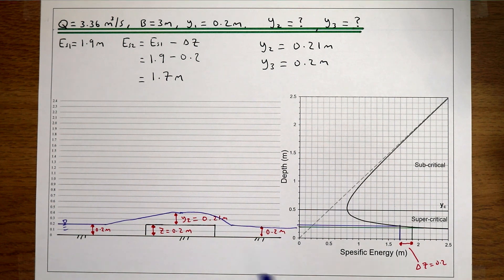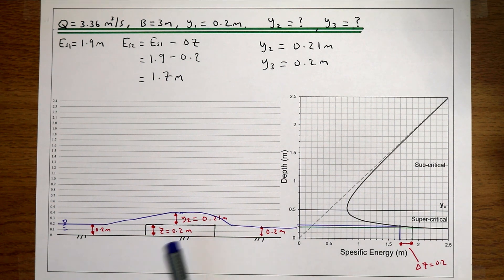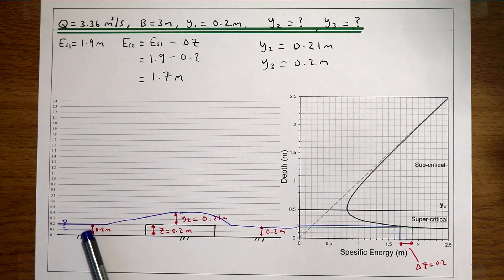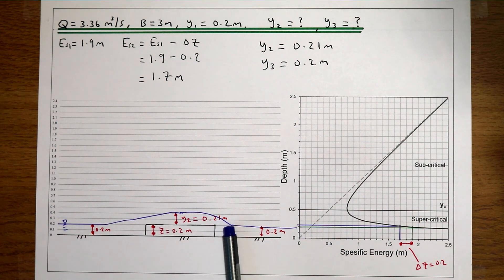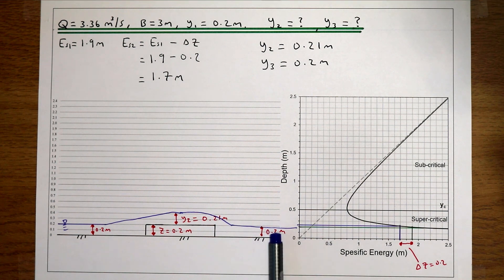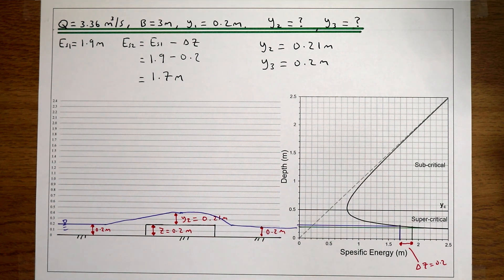So for supercritical flow, if we put a small obstruction in the flow, we start with an initial flow depth, the flow increases over that obstruction, and then returns to the initial flow depth after the obstruction. That's what happens when we put a small obstruction into supercritical flow.